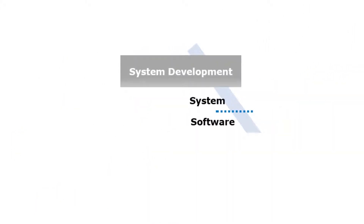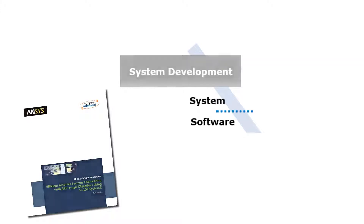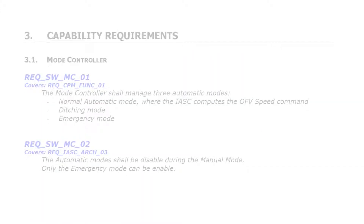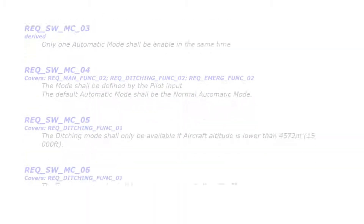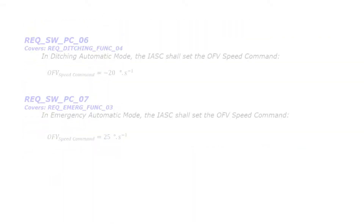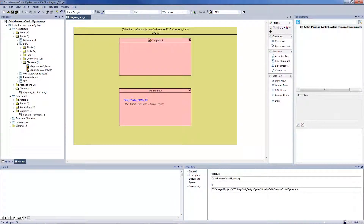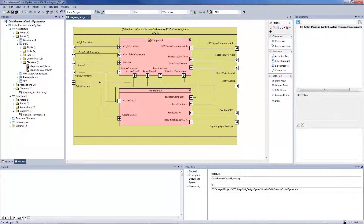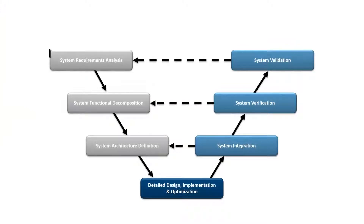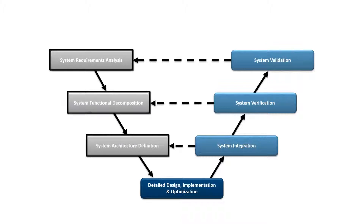First, the system development phase. This phase is based on the ARP 4754A guidelines. At the beginning of the development cycle, the definition of complete and correct requirements is crucial. For any type of model, you need to identify the requirements from which the model is developed. Those requirements should provide details and constraints to enable model development and verification activities, and should be correctly allocated to software and electronic hardware items. The ARP 4754A recommends going from requirements analysis to functional decomposition and architecture definition, while validating between each phase either the requirements or the architecture.